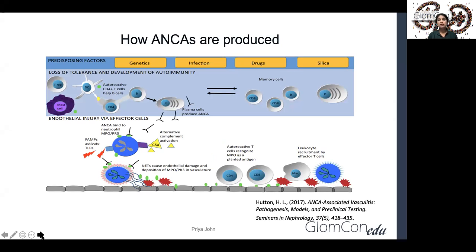So how are ANCAs produced? ANCAs are produced akin to inciting factors which might be immunogenic or non-immunogenic in nature. The genetic polymorphisms and infectious agents constitute the immune factors, whereas drugs and metals like silica constitute the non-immune factors.